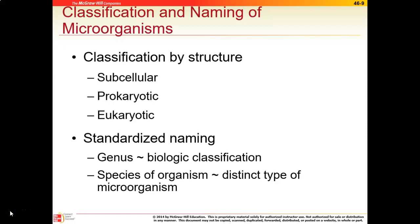Eukaryotic cells are more complex — they have a nucleus and organelles. This category includes protozoans, fungus, and certain parasites. Our human cells are also eukaryotic, but we're talking about microorganisms here. There is also a naming process: microorganisms have two names like a first and last name — a genus (their biologic classification) and a species name (the distinct type within that genus).